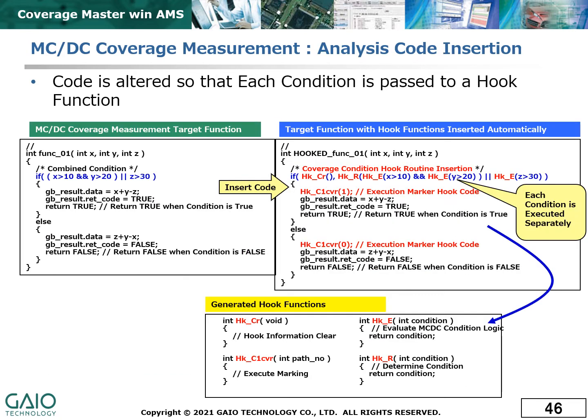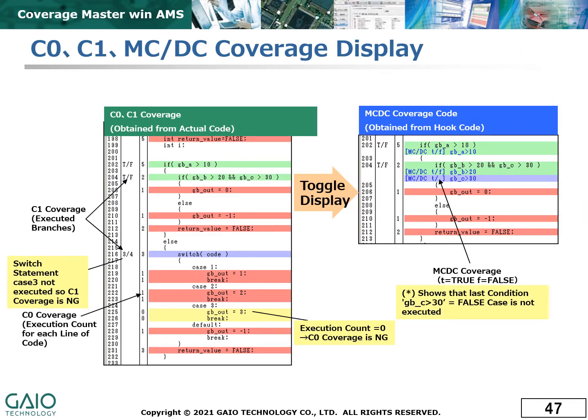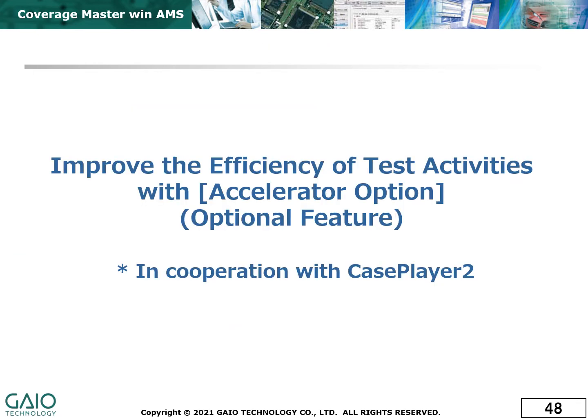Here we look at the operation of the hook code. Each condition is evaluated individually and its result is stored. The coverage display for MCDC coverage then shows the execution of each condition individually. We also offer an accelerator option to speed up your test activities.